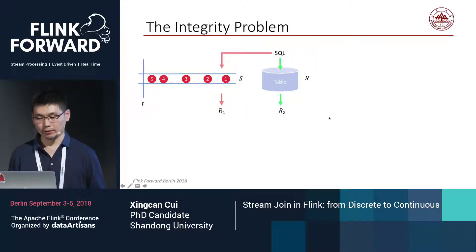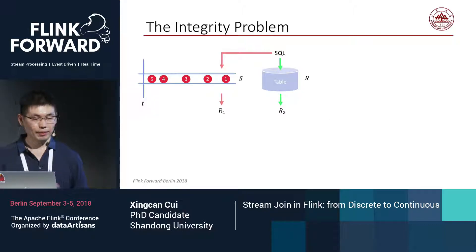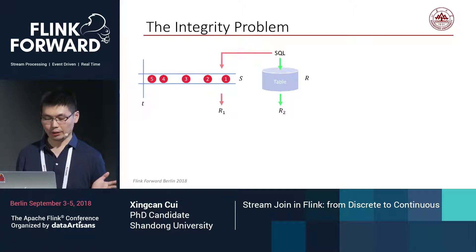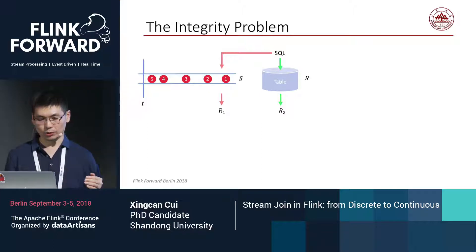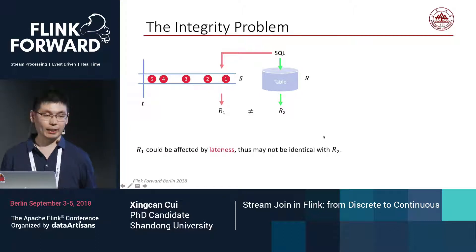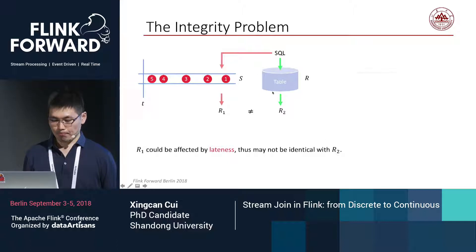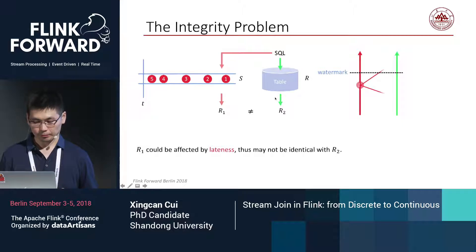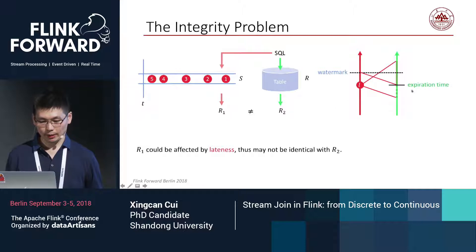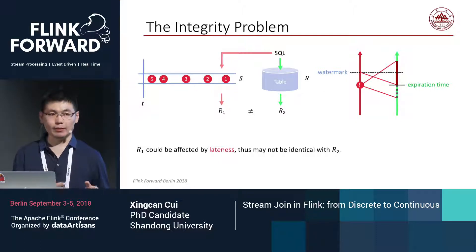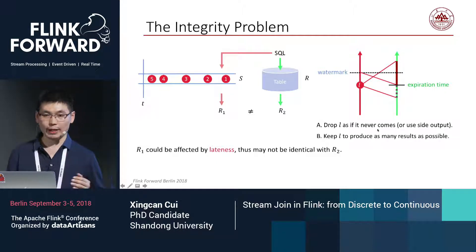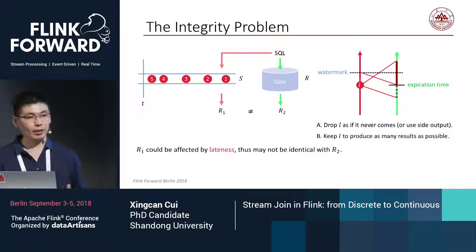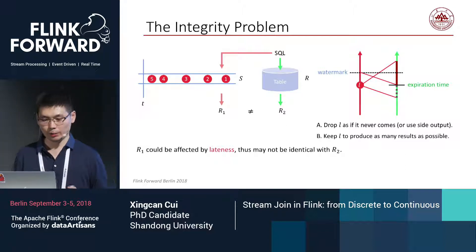The last issue is integrity of the join result. The execution results for SQL on tables and on streams should be exactly the same, but in real applications, due to data lateness, the results may differ. For example, a late record L arrives after the watermark, but there may still be records from the right stream that can be joined with it. There are two options: drop L as if it never came, or preserve L and join as many results as possible. In the current version of Flink, we choose option two — and perhaps in the future we will need a switch for this behavior.